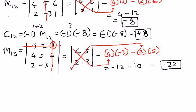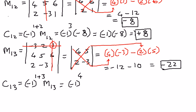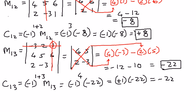Let's find the cofactor as well. C13, the cofactor of element A13, is going to be equal to negative 1 raised to the power of i plus j, where i is 1 and j is 3, times M13. Therefore, we can expand this as negative 1 raised to the power of 4, times M13, which equals negative 22. Therefore, negative 1 raised to the power of 4 is positive 1, and positive 1 times negative 22 is going to be equal to negative 22. That is the cofactor of element A13.